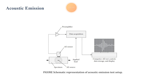Referring to the figure, the acoustic emission test setup includes: data acquisition, preamplifier, AE sensor, acoustic emission sensor placed on the source specimen, how the load is applied, and graphs displayed on the computer — all shown in the representation of this acoustic emission system test setup.